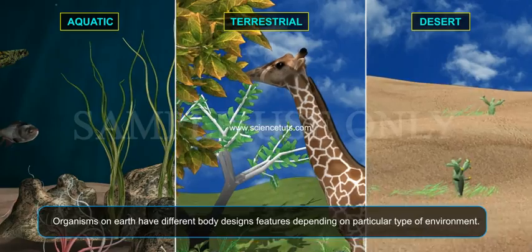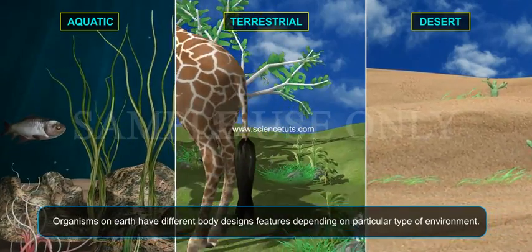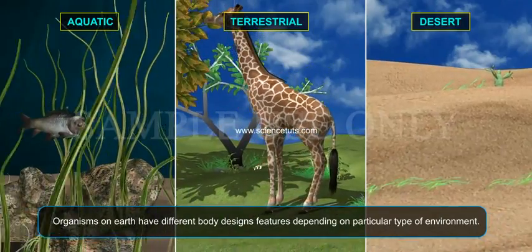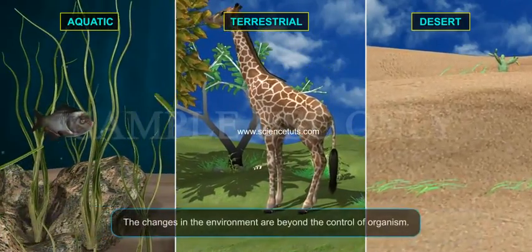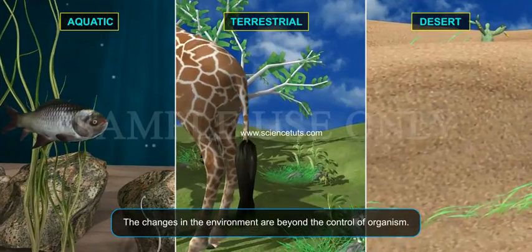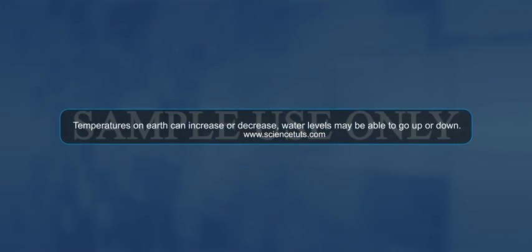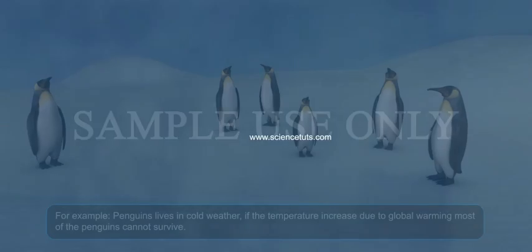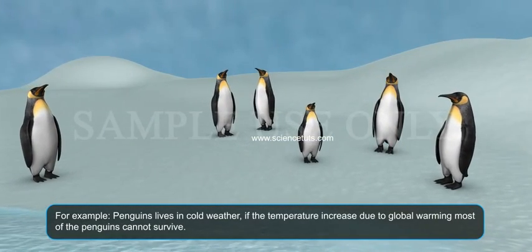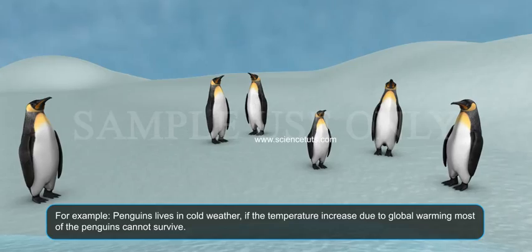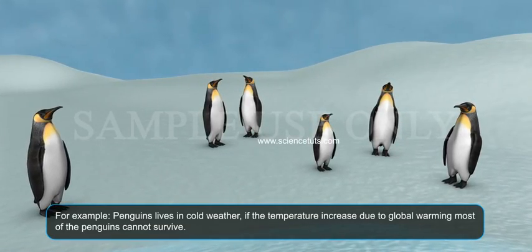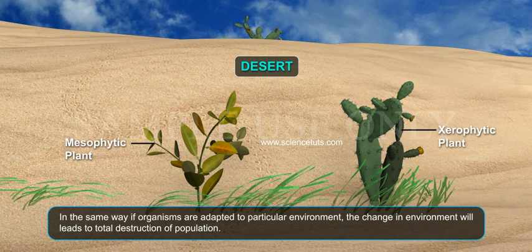Why and how are variations important in DNA? Organisms on earth have different body design features depending on a particular type of environment. The changes in the environment are beyond the control of organisms. Temperatures on earth can increase or decrease, and water levels may go up or down. For example, penguins live in cold weather. If the temperature increased due to global warming, most of the penguins cannot survive. In the same way, if organisms are adapted to a particular environment, a change in that environment will lead to total destruction of the population.